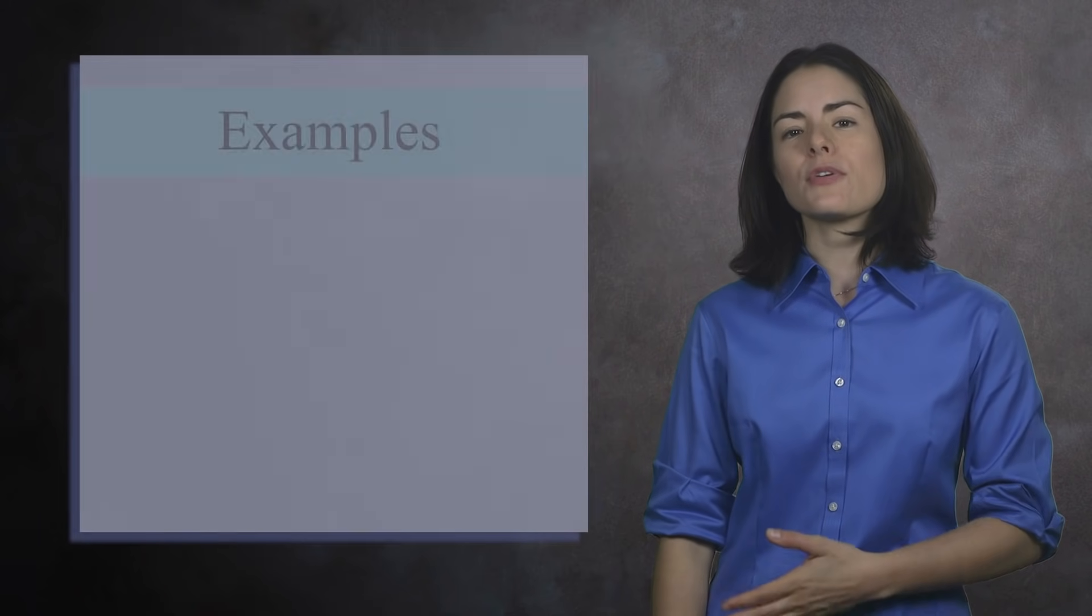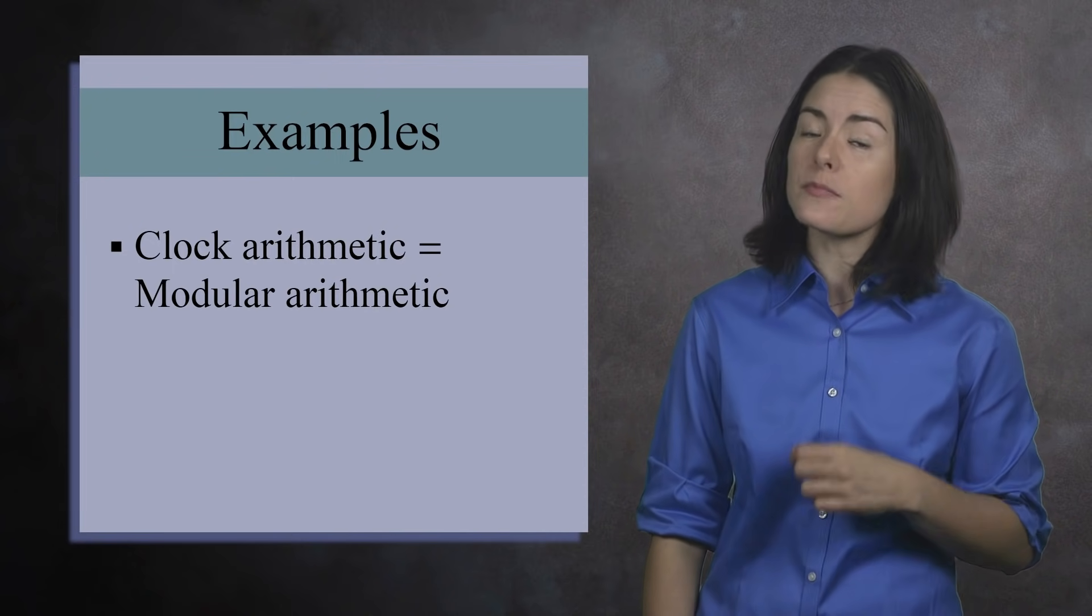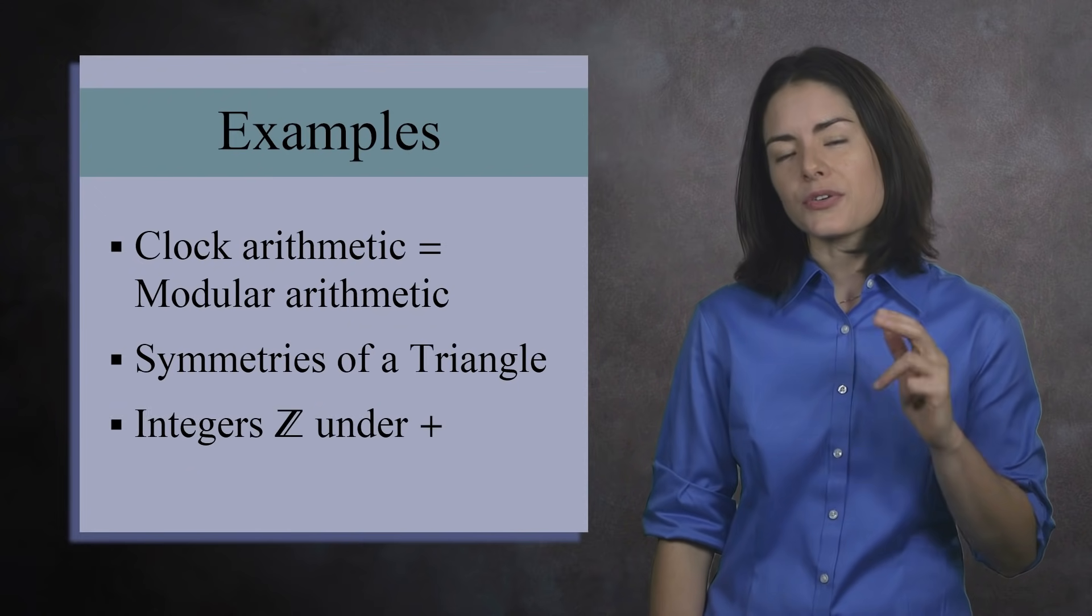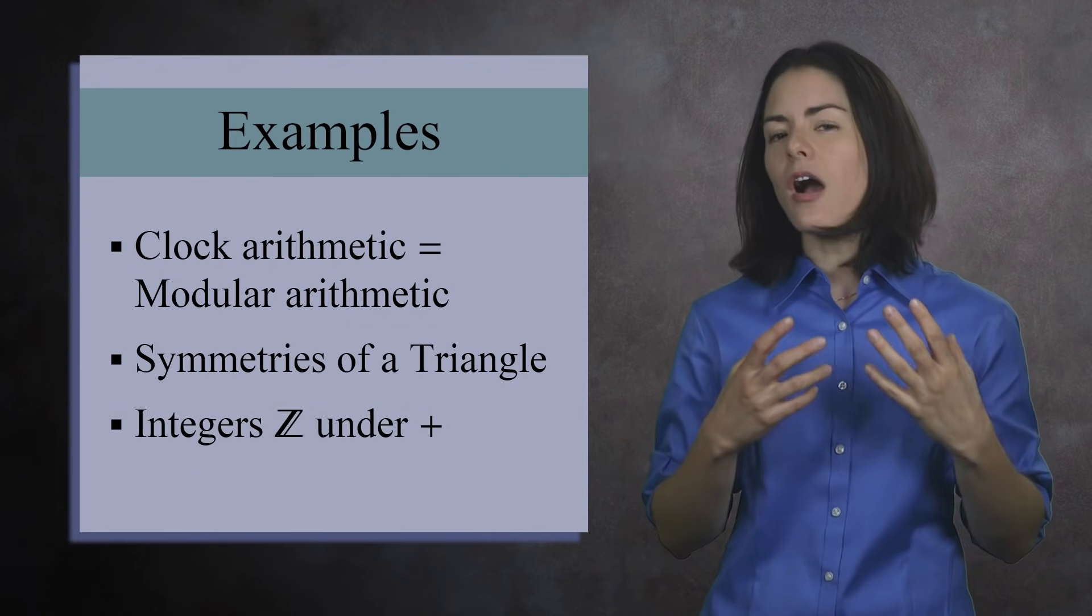So we've now seen three very different examples: clock arithmetic, which is more commonly known as modular arithmetic, the symmetries of a triangle, and the integers under addition. Let's now see what these three examples all have in common.